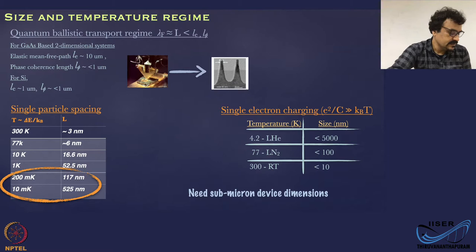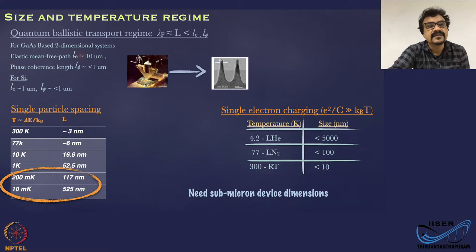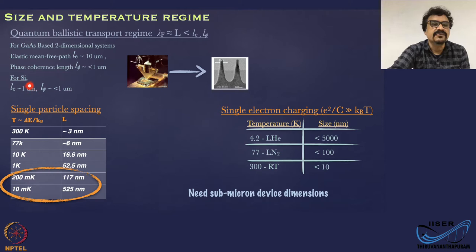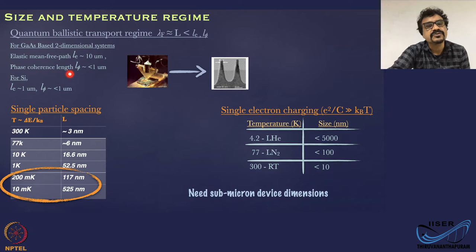For one of the most popular two-dimensional systems based on gallium arsenide, the elastic mean free path length LE is a few micrometers — maybe a couple of tens of micrometers — and the phase coherence length is something very close to a micrometer. For silicon, the elastic mean free path is only a fraction of what you get in gallium arsenide, whereas the phase coherence length is close to what you have in gallium arsenide.